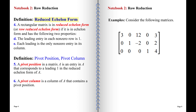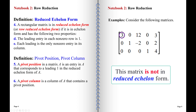Now, reduced echelon form. A matrix is in row reduced echelon form — or simply reduced echelon form — if it is first in echelon form and satisfies two additional conditions: each leading entry is a one, and each leading entry is the only non-zero entry in its column, meaning entries above the leading entries must also be zero. The first example matrix is not in reduced echelon form because the leading entry in the one-one position is not a one.